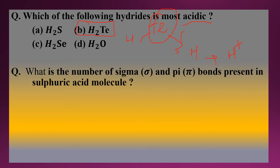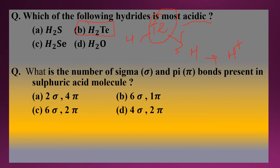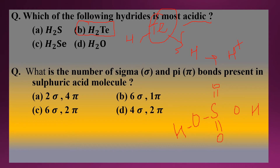The next question is: what is the number of sigma and pi bonds present in a sulfuric acid molecule? The structure of H2SO4 has four oxygen atoms surrounding the sulfur atom and two hydrogen atoms, which connect to oxygen atoms with single bonds. There is a double bond between two of the oxygen atoms and sulfur, giving the structure with two S=O bonds and two S–OH bonds.